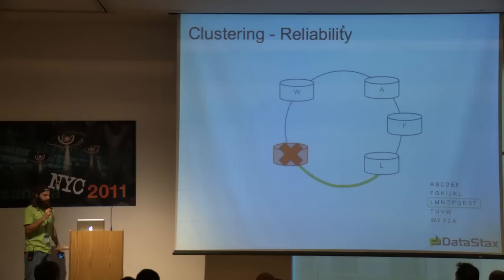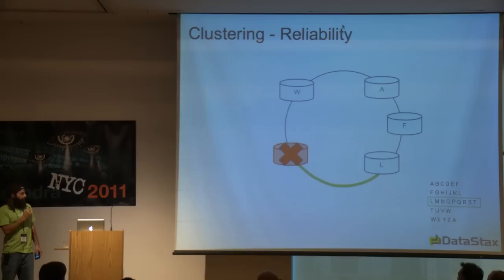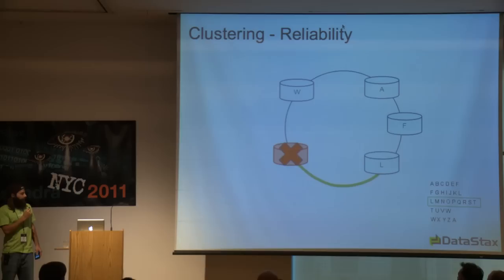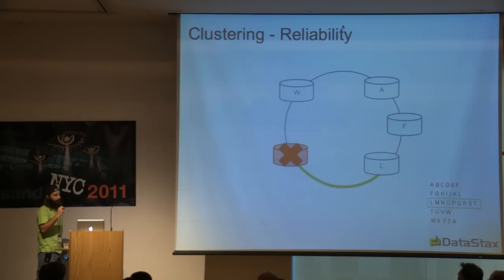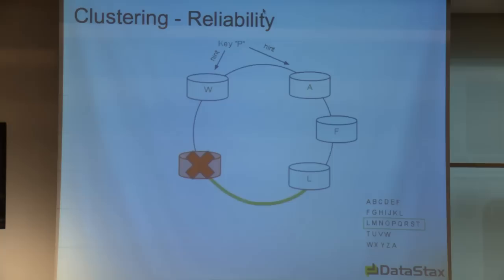Reliability — what happens when a node fails? With a replication factor of three, you have three copies of data spread around the ring. If node T goes down, nodes W and A have complete copies of what was on node T. When a client reads for key P, node W or node A can both respond even though node T is down. When a write comes in, it's captured on W and A. When node T comes back online, the writes will be replayed to that node.